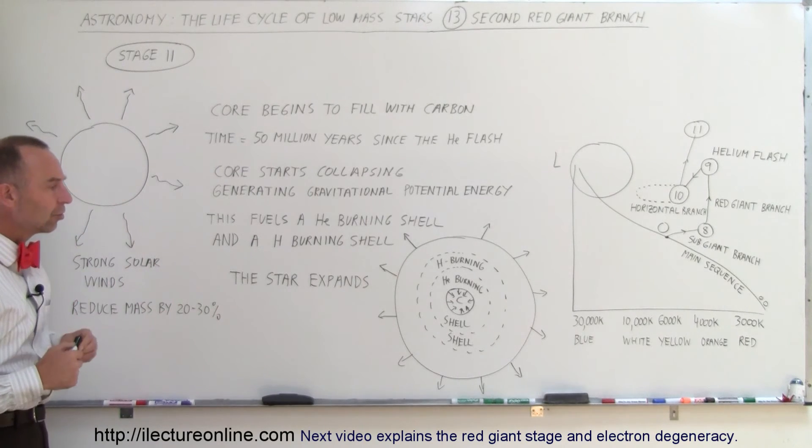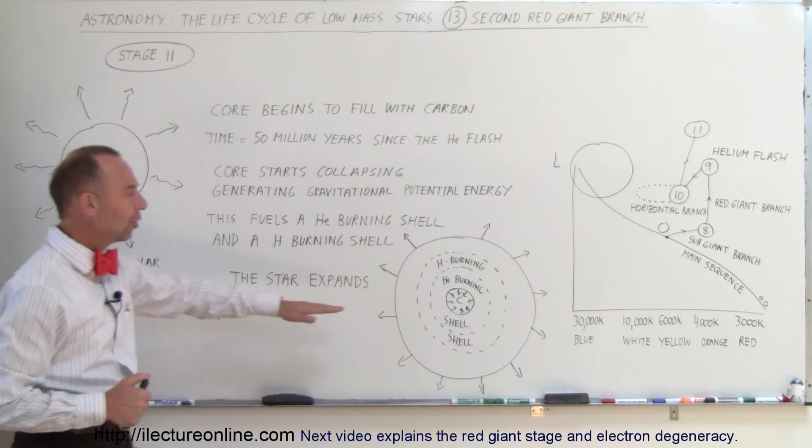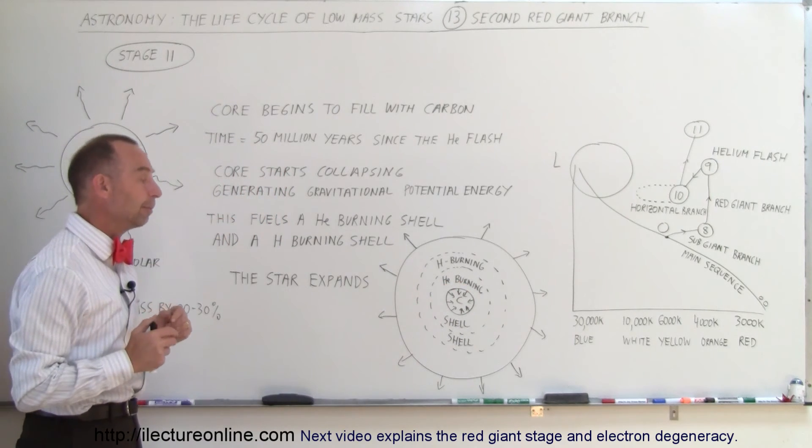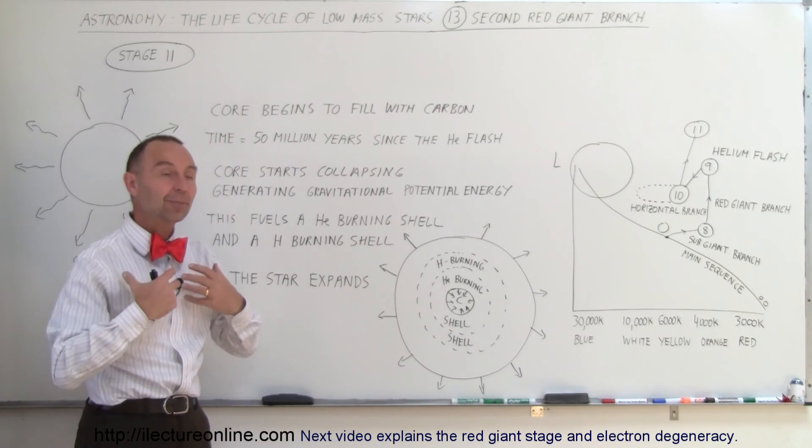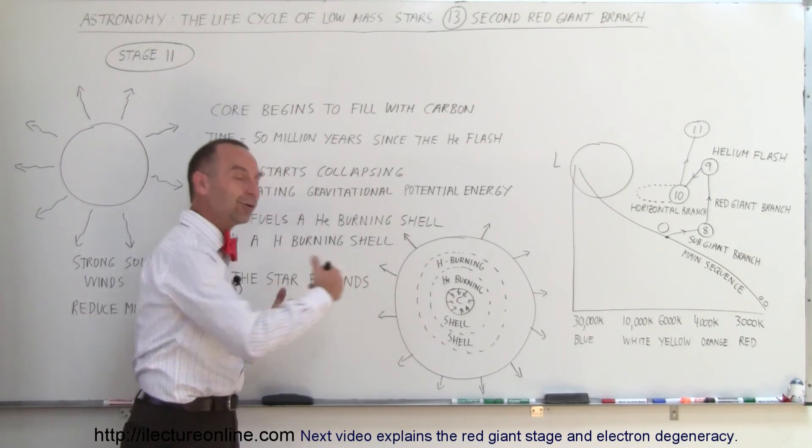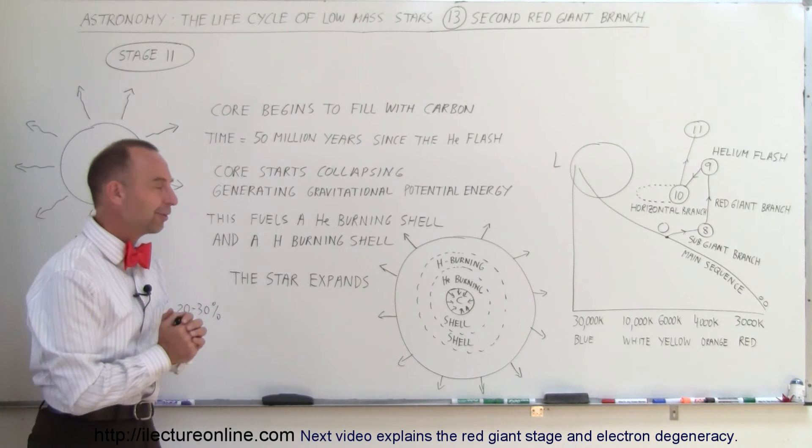There we are at the second red giant branch stage where the core begins to collapse down into a solid ball of carbon. It turns out most of the carbon that we have in our bodies comes from these places right there, but how it gets from there to here, well that's another story for another video.